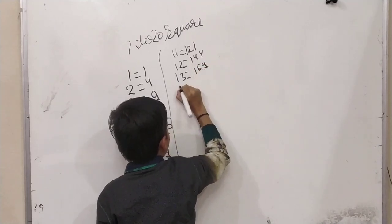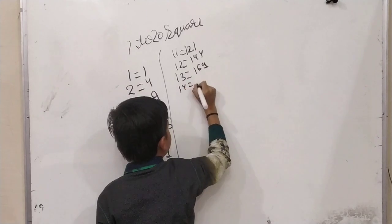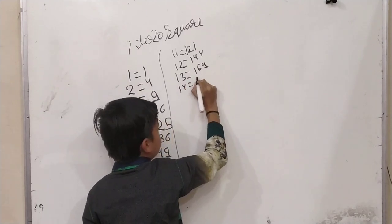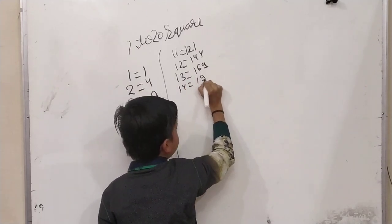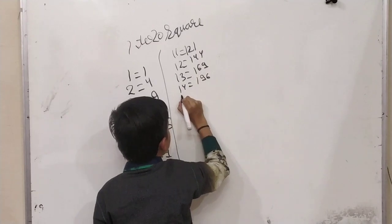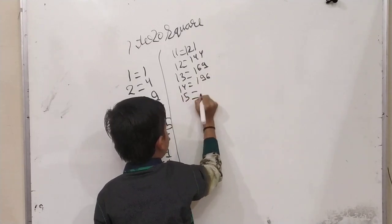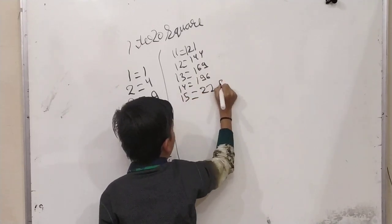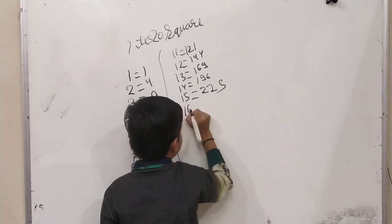Fifteen squared, two twenty-five. Sixteen squared, two fifty-six.